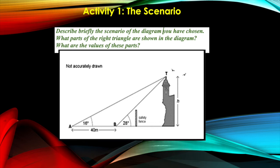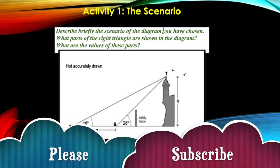That means we do not know how high is the watchtower. The next question is what are the values of these parts. The first reference angle on A is equal to 16 degrees. The reference angle on B is equal to 28 degrees. And the distance between A and B, which is part of the whole adjacent side, is 40 meters. So those are the values of the parts that are being given in the diagram of the scenario here.